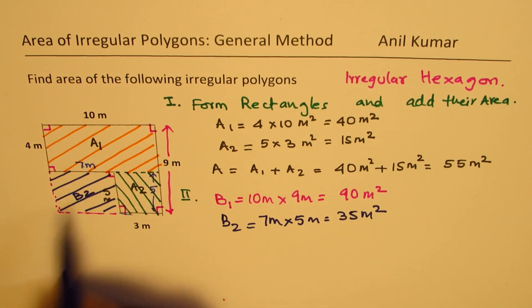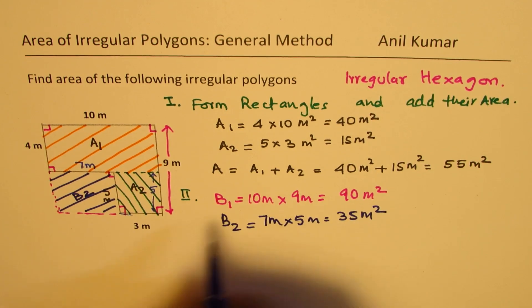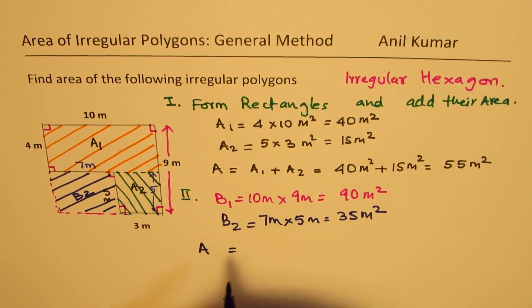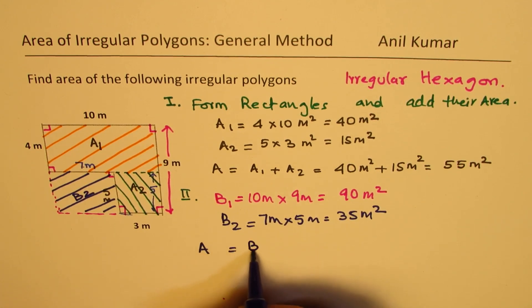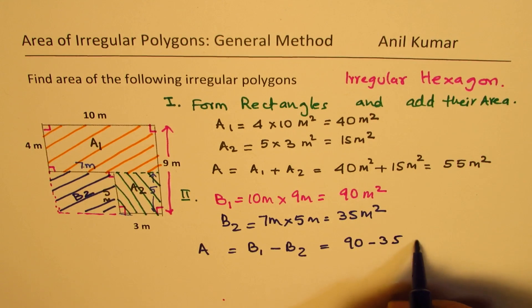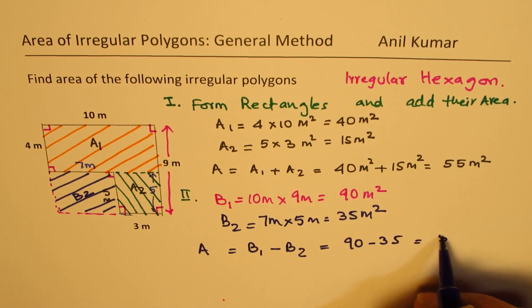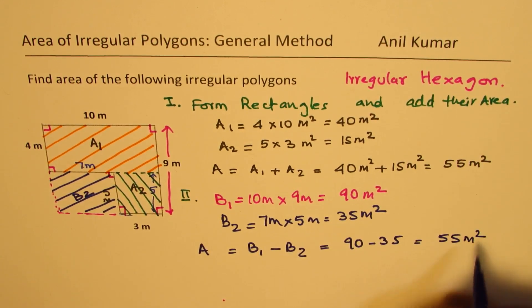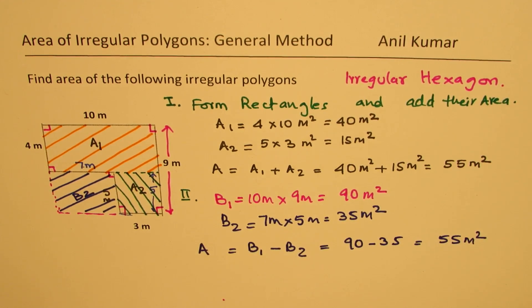So that is the area which is not included in our original figure. Now total area A is the big area B1 minus B2. So which is 90 minus 35 and that gives you again 55 meters squared. So you get the same area, perfect as expected. We have exactly the same area.